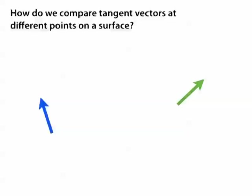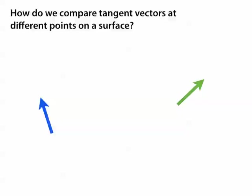Let me give some background on connections on smooth surfaces. Here's a question that motivates the need for connections: How do we compare two tangent vectors that originate at different points of a space?